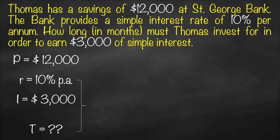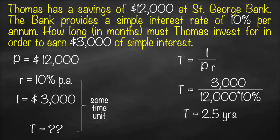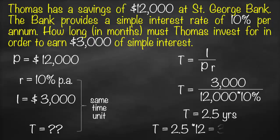Remember, interest rate and time must have the same time unit. Since our interest rate is annual, our formula will give time in years. Time = I ÷ (P × r) = 3,000 ÷ (12,000 × 10%) = 2.5 years. But the question asks for months, so we convert: 2.5 years × 12 = 30 months.